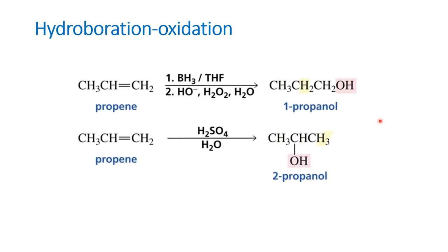Let us start with hydroboration oxidation reaction and what is so significant about it. There are two stages: the first step is hydroboration reaction, the second step is oxidation reaction. We can also make alcohol via an acid-catalyzed reaction, which gives 2-propanol as per Markovnikov addition. But when hydroboration oxidation is done, we get 1-propanol.